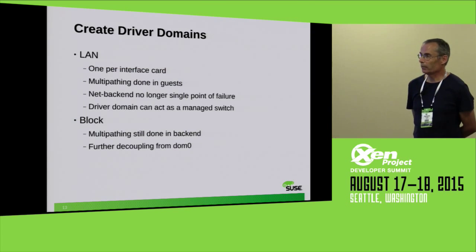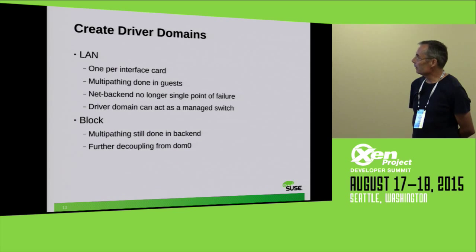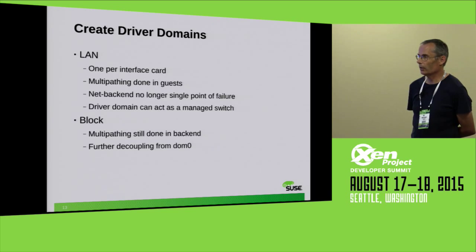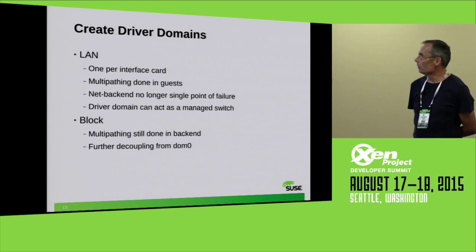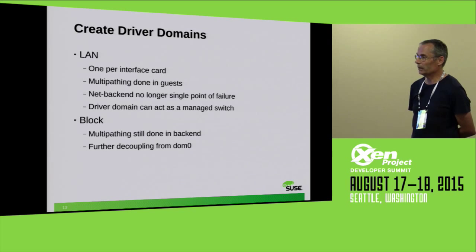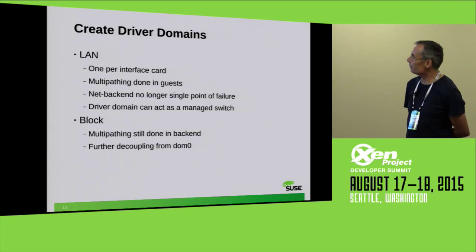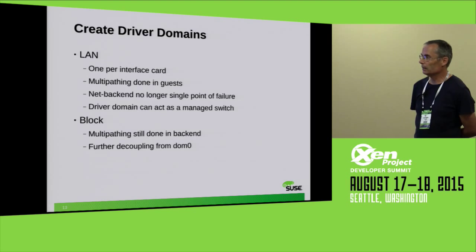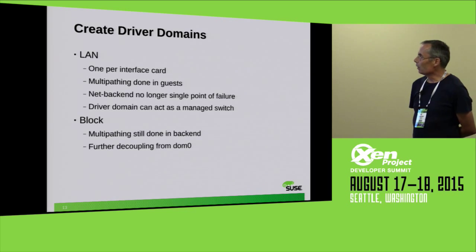The next thing we can do is use driver domains. It's done for LAN, but again it's not the common case for configurations. It's convenient to build one driver domain per interface card, because if a LAN card fails and might pull down the driver domain, another driver domain is still working for the other path. In this case, multi-pathing for LAN must be done in guests, but the net backend is no longer a single point of failure because there are more than one net backend.